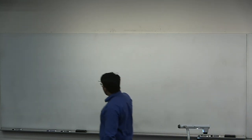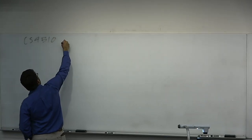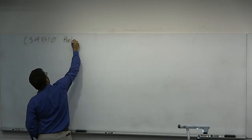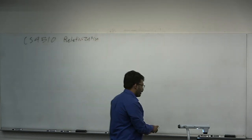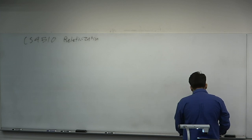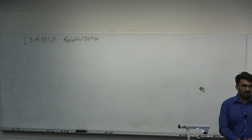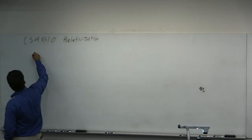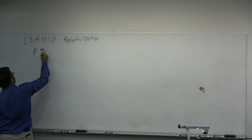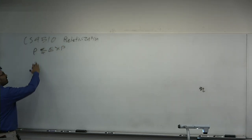Welcome to CS4510. The topic of today is what's called relativization. This is probably one of my favorite lectures in the unit. We basically know very well about how diagonalization is a very powerful tool in complexity theory. We've shown that you can separate P from EXP using diagonalization, and many other classes — time, space, whatever — of the same resource.